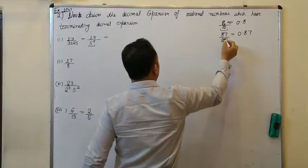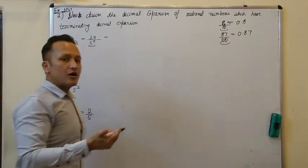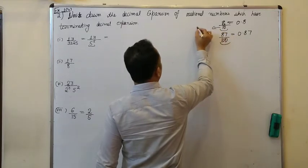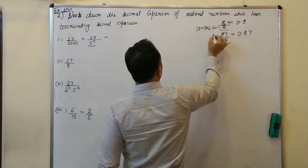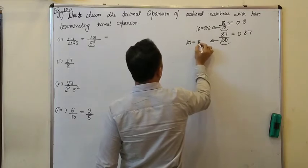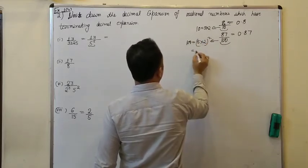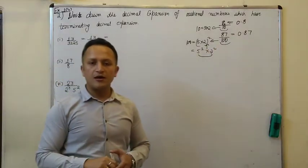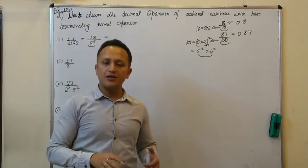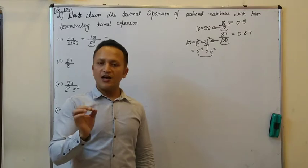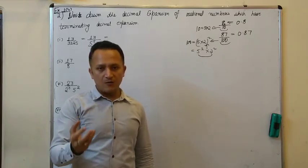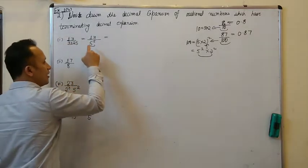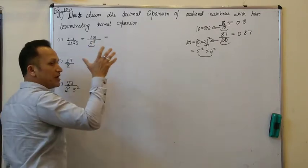Ab iski expression decimal mein kaise banti hai? As shown with the example, jab niche ten, hundred, thousand ho to seedha likh sakte hain. Ten kaise aata hai? Five aur two ka jab pair banta hai. Hundred bhi kaise aaya? Kyunki hundred mein five aur two ke do pair bante hain, that is five power two, two power two. It means our target hai ki agar mujhe hundred banana chahta hun to five aur two ke complete pair banenge, to denominator mein ten, hundred, thousand type ka number banega. So the target is ki denominator mein five aur two ke pair complete karne hain.